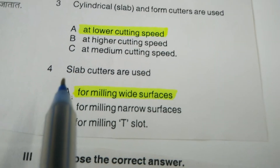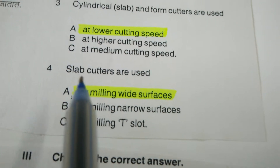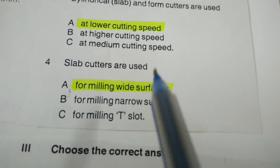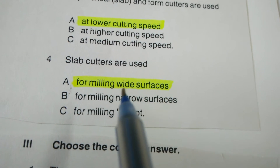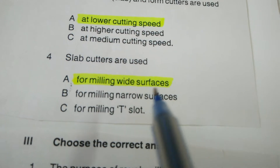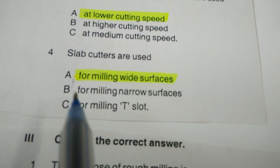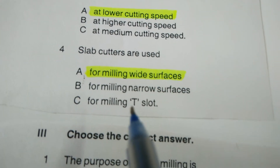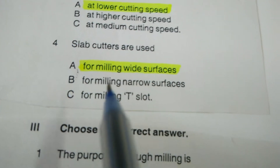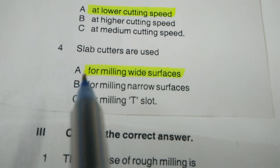Question number four: Slab cutters are used — for milling a wide width surface, for milling a narrow surface, or for milling a T-slot? The correct answer is for milling a wide width surface.